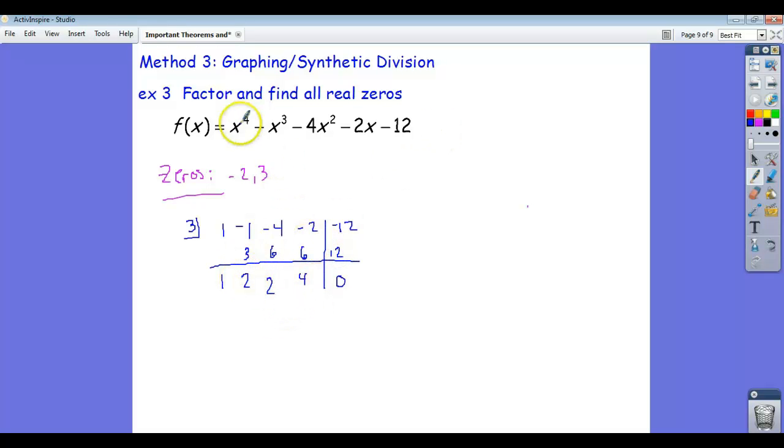Now remember, if you decode this, it means x to the fourth minus x cubed, this polynomial equals x minus three times this here. So I'm just going to write that. It means that equals x minus three times x cubed plus 2x squared plus 2x plus 4.